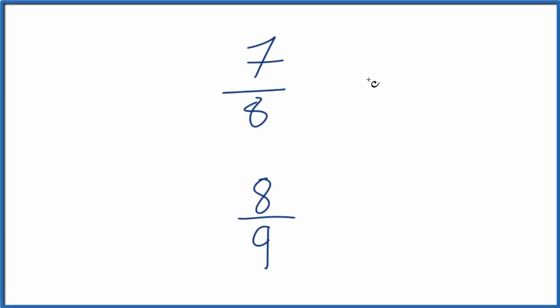So which of these two fractions is larger, 7 eighths or 8 ninths? So what we're trying to figure out is 7 divided by 8, is that a bigger number than 8 over 9? There's two ways we can do this.